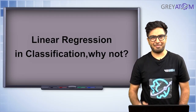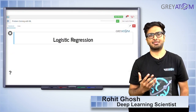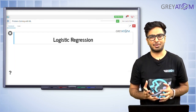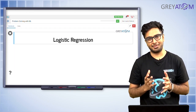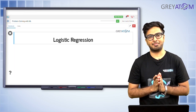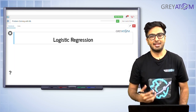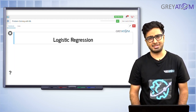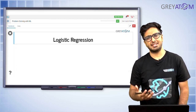Hi guys, this is Rohit and I'm back from the linear regression class. Today we are going to be talking about something called logistic regression. From today onwards our journey takes on a new direction. Till linear regression we were talking about making predictions about continuous variables — that was all regression was about. Now we are going to be talking about prediction about discrete variables, which is basically a classification task.